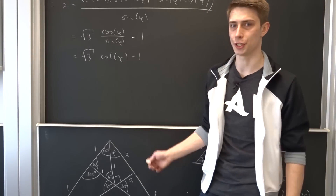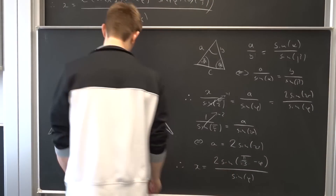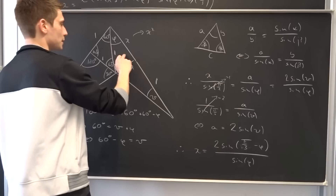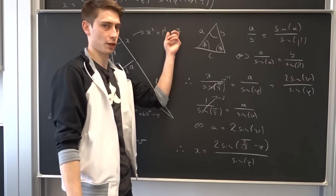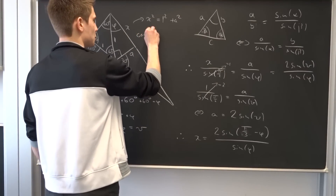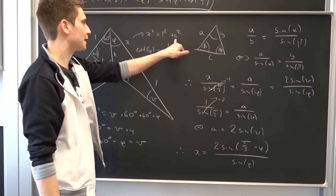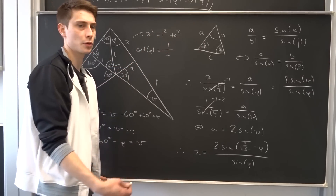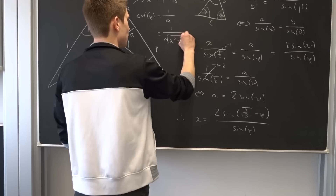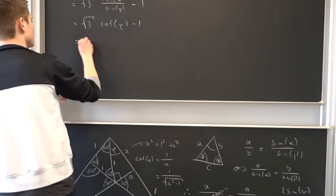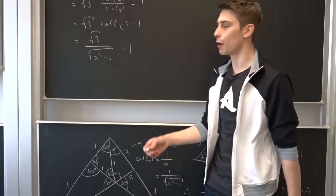We have a problem: we need an expression for cot(φ). Using the right triangle and the Pythagorean theorem, since x is the hypotenuse: x² = 1² + a². The cotangent of φ is adjacent over opposite, which is 1/a. Isolating a: a = √(x² − 1), so cot(φ) = 1/√(x² − 1). Plugging in: x = √3/√(x² − 1) − 1.